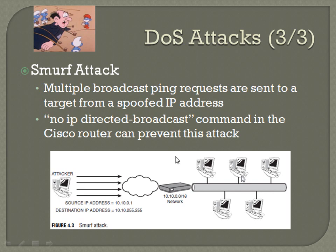The 'no IP directed broadcast' command means that a broadcast has to come from a node directly attached — you can't direct the broadcast over layer 3 to get there, so the spoofing would not work as long as you've got that command in your Cisco router. A lot of people ask why it's called a Smurf attack — that's just the name of the program used to initiate it, developed in the late 80s or early 90s.